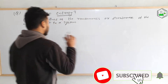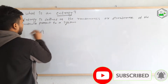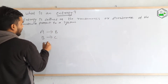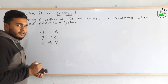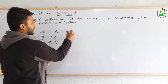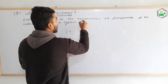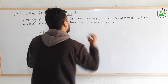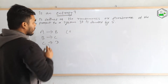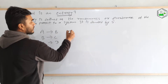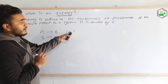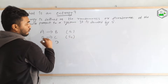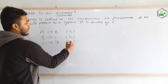Now let's take an example. Suppose I have a reaction like A converts to B, then B converts to C, and C converts to D. This is a three-step reaction. For this reaction there will be certain entropy changes. Entropy is denoted by S. So for each step there will be an entropy change: S1 for the first step, S2 for the second, and S3 for the third.